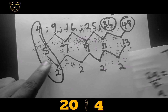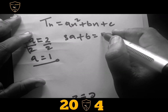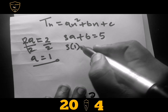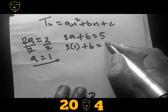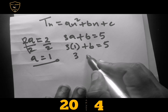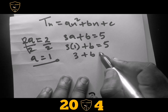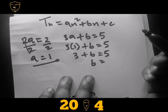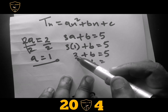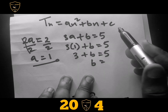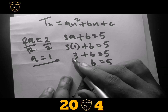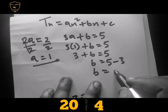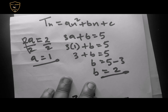To find b, we say 3a plus b equals the first term of the second row. The second row starts with 5, so we take 5. We know a is 1, so: 3 times 1 plus b equals 5, giving us 3 plus b equals 5. When we take 3 to the other side, the sign changes to negative 3, so b equals 5 minus 3, which is 2.